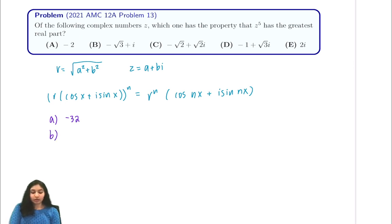For part B, now is where we want to use de Moivre's theorem. We know that negative root 3 plus i is equal to 2 times the cosine of 5π over 6 plus i sine of 5π over 6. When we take this to the fifth power we're going to get 2 to the 5, which is 32, times cosine of 25π over 6 plus i sine of 25π over 6.